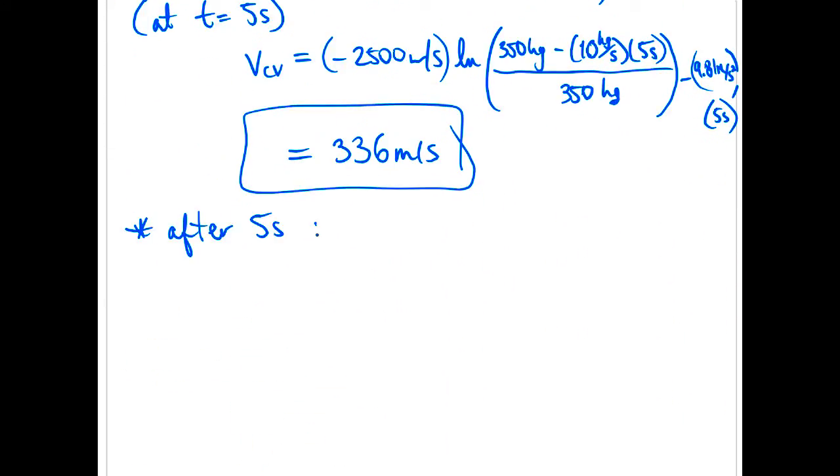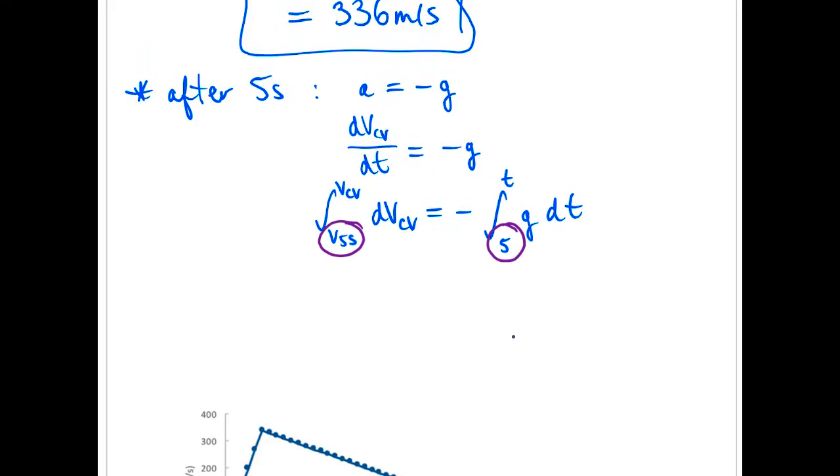So after five seconds, all we have is acceleration due to gravity. So we know the acceleration of the rocket now is just negative g. So I'll sub in for acceleration, separate and integrate. It's really important to notice these integration bounds here. So this is starting after the five second mark. So make sure you integrate from the velocity at five seconds and from time at five seconds.